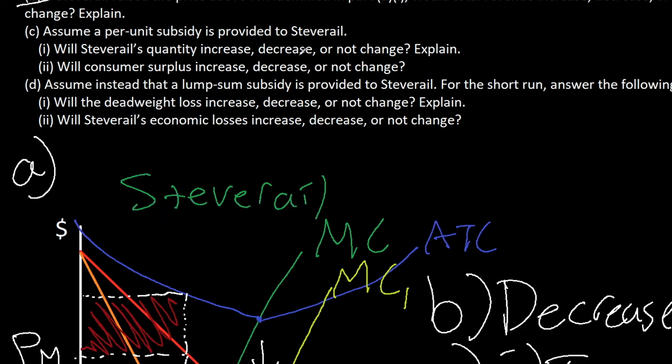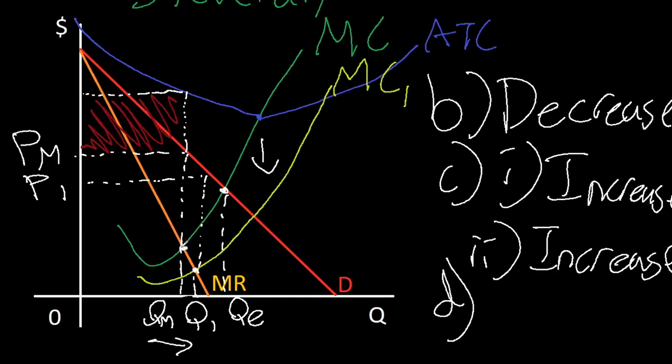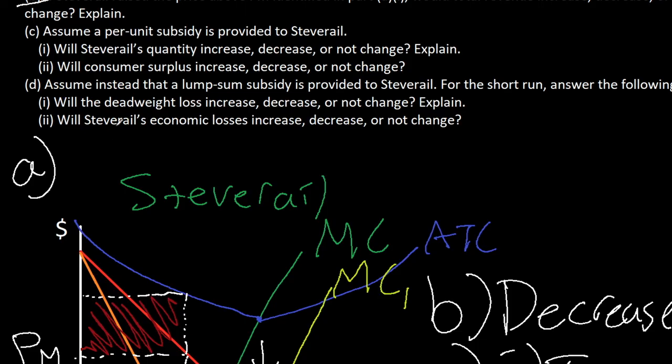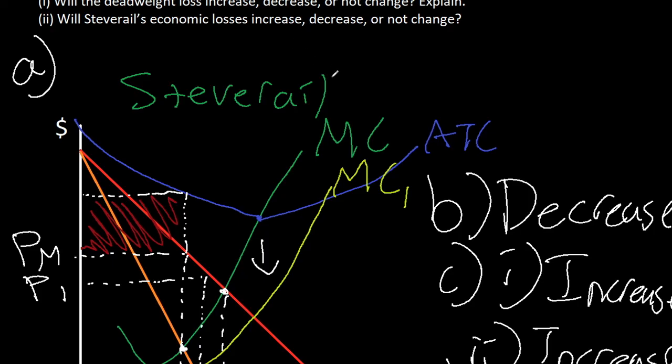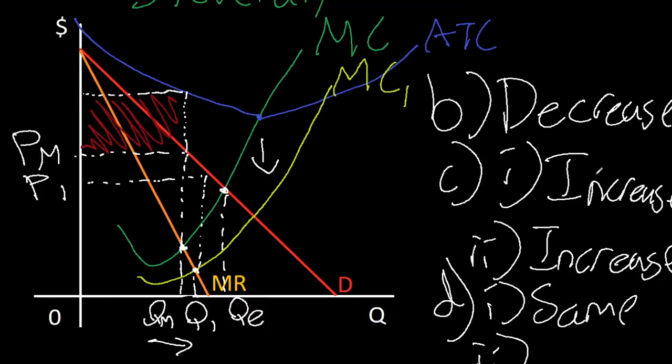For part 1, which is asking if deadweight loss is changing, we can see MC meets MR is still the same as before. The deadweight loss is still the same since only the production costs have decreased, not the actual price. So deadweight loss remains the same. Finally for part 2, will Steve Rail's economic losses increase, decrease, or not change? While this monopoly's total revenue is still the same, his costs of production have been lowered as ATC has been shifted downwards. That means the losses Steve Rail incurs have actually decreased because he now has less cost to pay for with the same total revenue. For part D we can just write decrease.